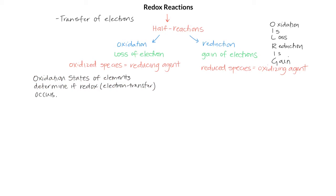Let's look at the reaction of sodium metal plus chlorine gas to produce sodium chloride. To determine whether or not this is a redox reaction, we need to look at the oxidation states of each element. The oxidation state of an atom in its free and uncombined elemental form is zero. So sodium metal is in its elemental form, so its oxidation state is zero. Chlorine is also in its elemental form — remember it's a diatomic — so it has an oxidation state of zero.